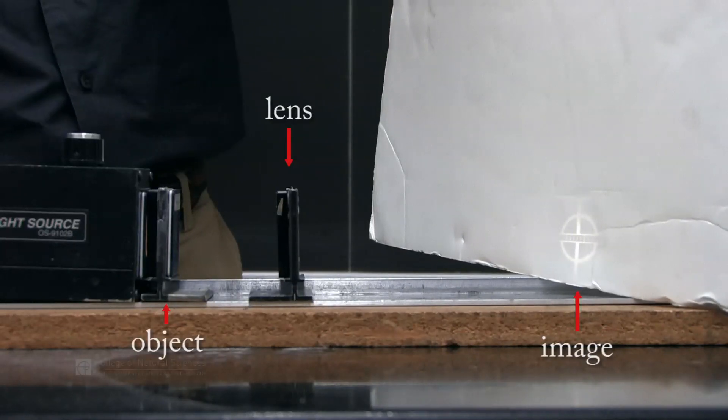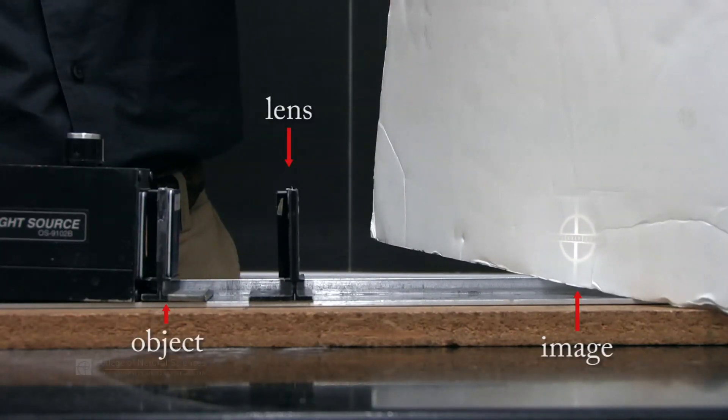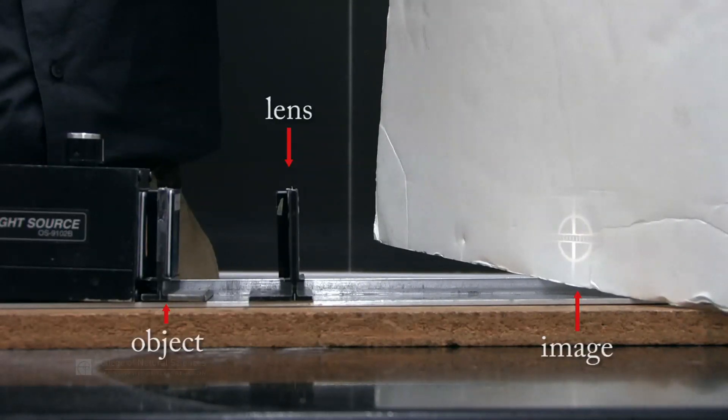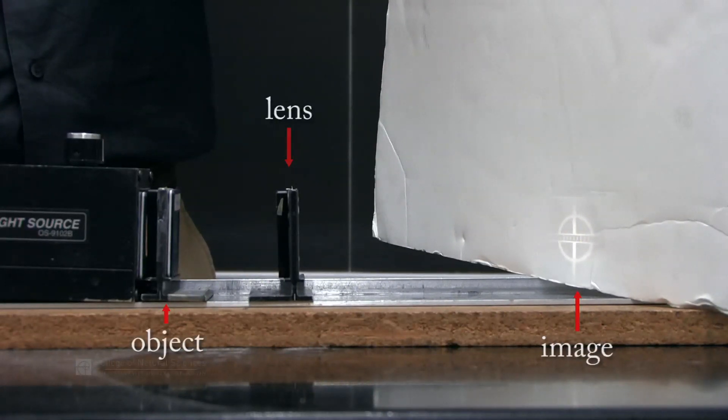So the question is: what is the relationship between properties of the lens and the distances between the lens to the object and the lens to the image?